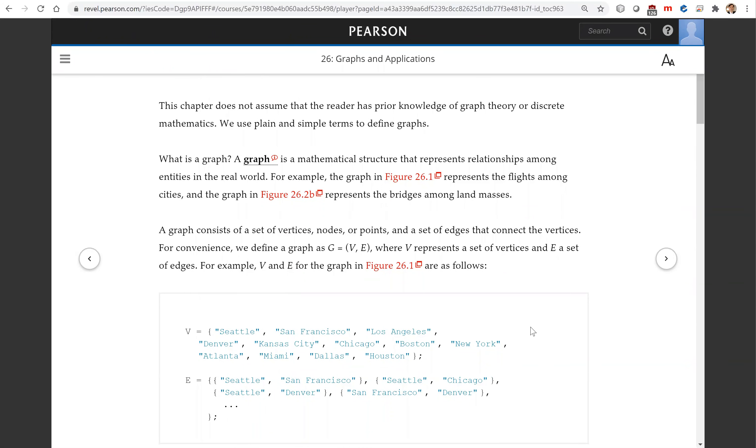A graph consists of set of vertices, also called nodes or points, and a set of edges that connect the vertices. So for convenience we define a graph as V E. Here using this notation G equals V E, V represents a set of vertices and E represents a set of edges.